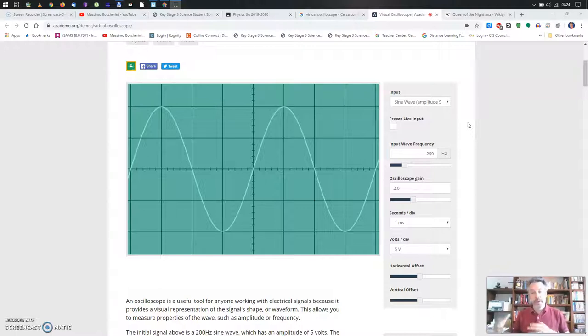It's a computer program that simulates the behavior of an oscilloscope. What does an oscilloscope do? It takes an input, for instance from a microphone, transforms that sound into an electric signal and then shows it on a screen. And your typical wave has this kind of up and down shape.